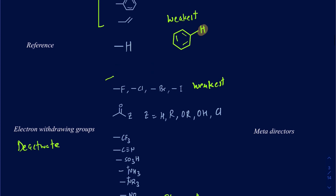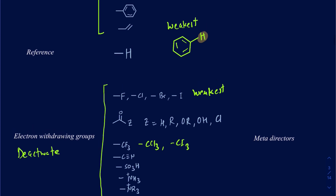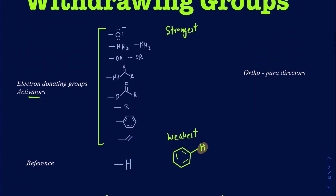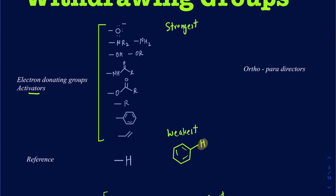All these groups are going to be your electron withdrawing groups. Halogens are going to be the weakest electron withdrawing groups, followed by the other groups. Halogens are electron withdrawing because of the inductive effect — they are electronegative. Some of the other groups have resonance effects as well, except for CF3, and you can also have CCl3 falling in the category of electron withdrawing groups because of the electronegative elements attached to carbon. Electron donating groups are ortho/para-directors, and electron withdrawing groups are meta-directors.